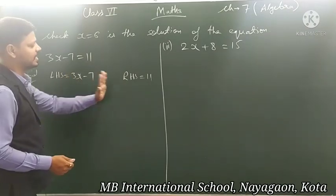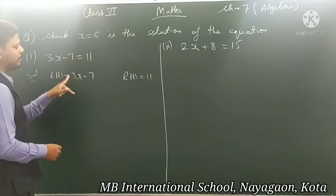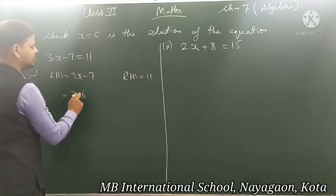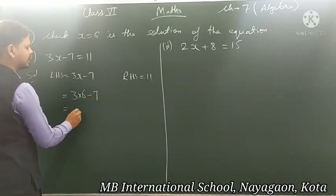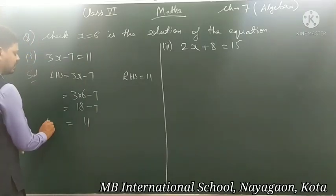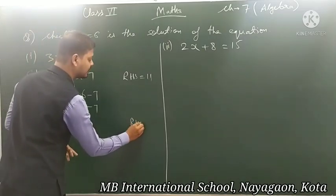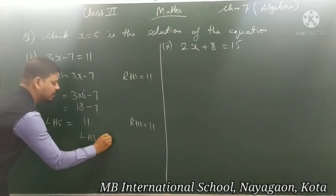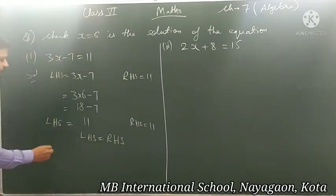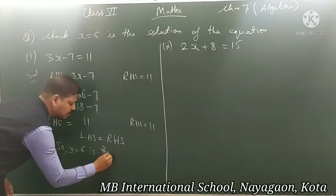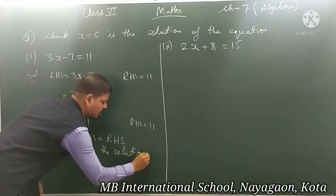So we put x = 6 in place of x and check whether LHS equals RHS. 3 multiplied by 6 gives 18, minus 7 gives 11. So the LHS value is 11, and the RHS value is also 11. Since LHS is equal to RHS, we write: LHS is equal to RHS. So x equal to 6 is the solution of the equation.